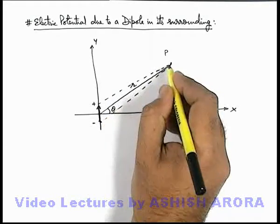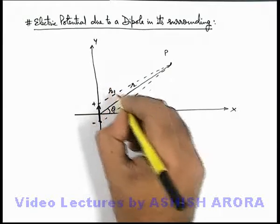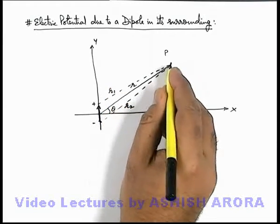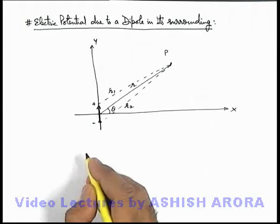And due to the negative charge, the negative potential exists. If these distances are r1 and r2 for point P from positive and negative end of dipole.